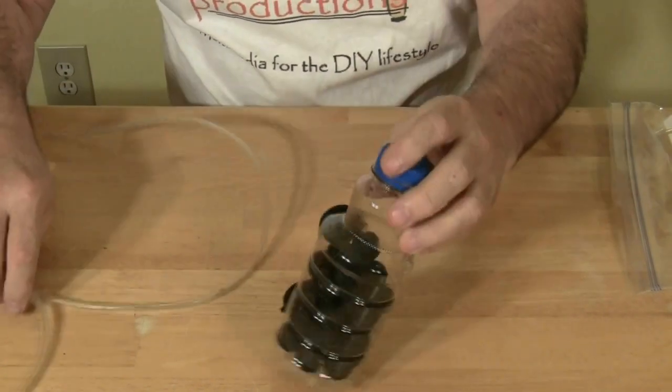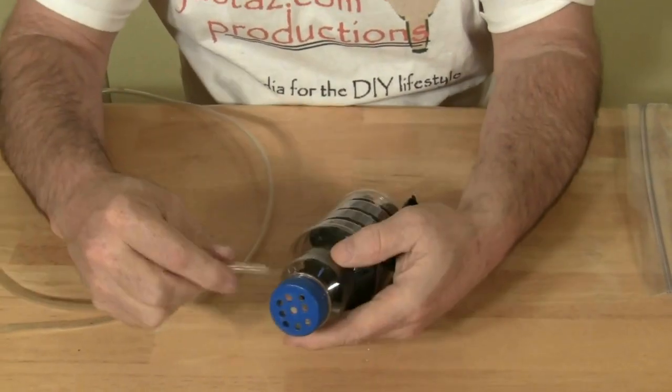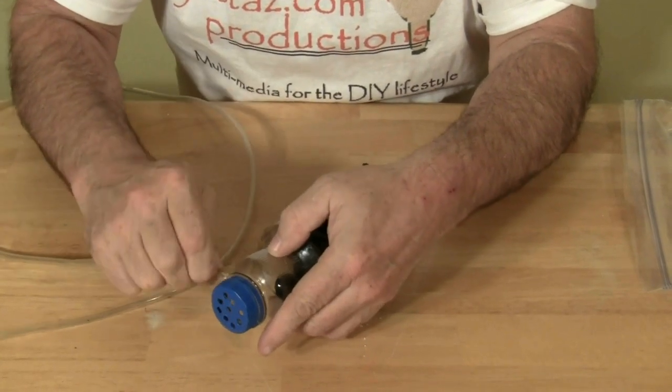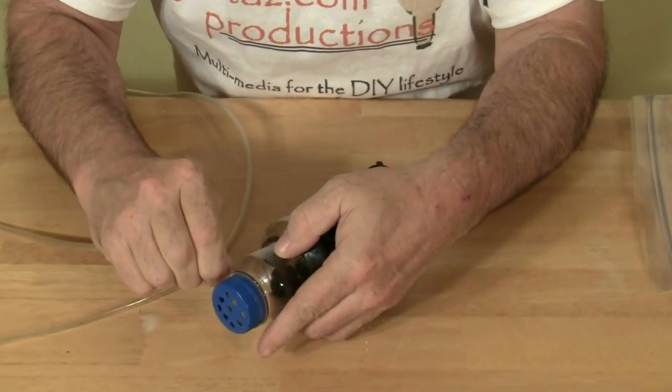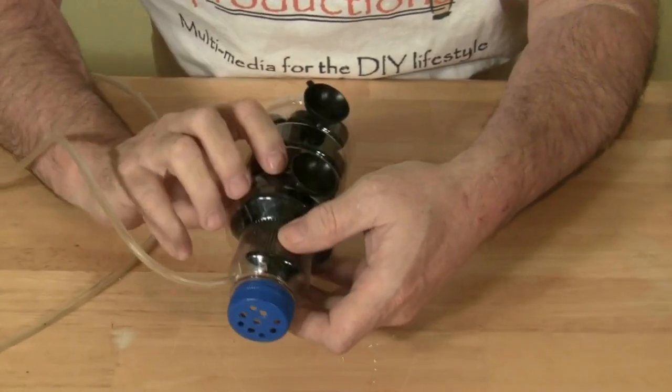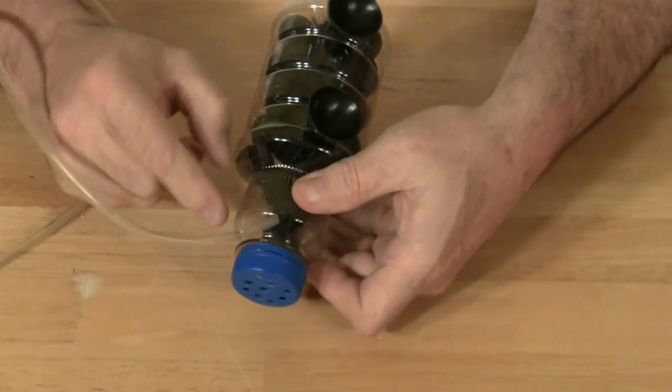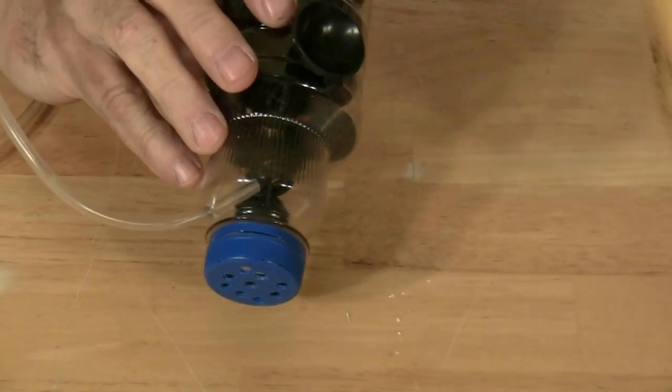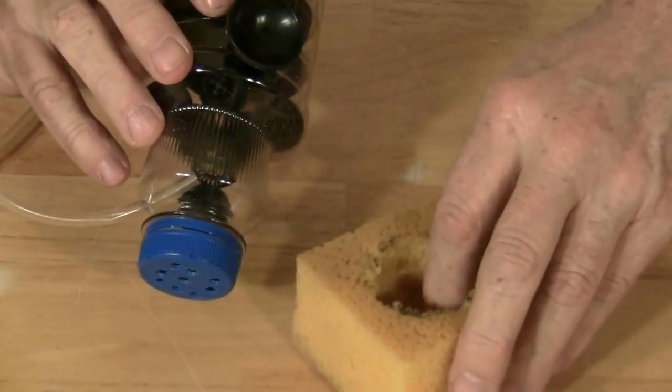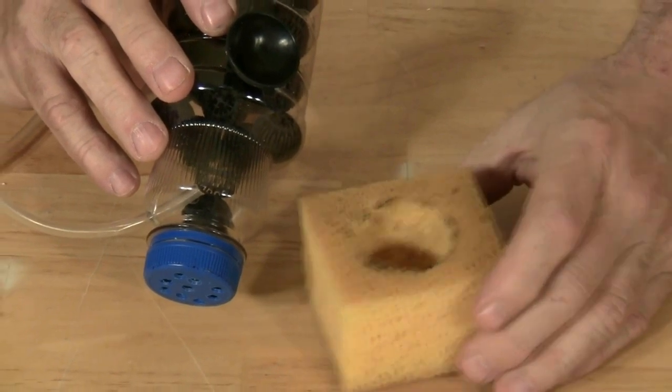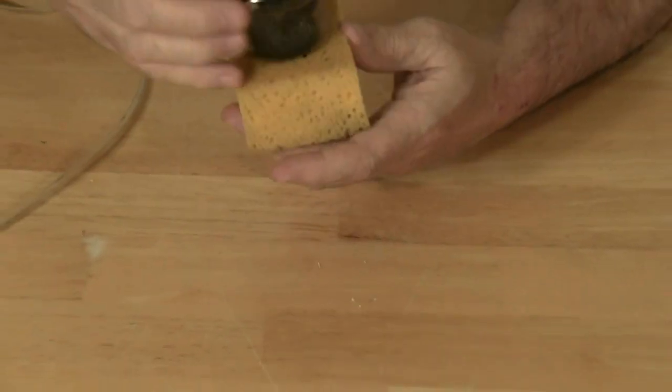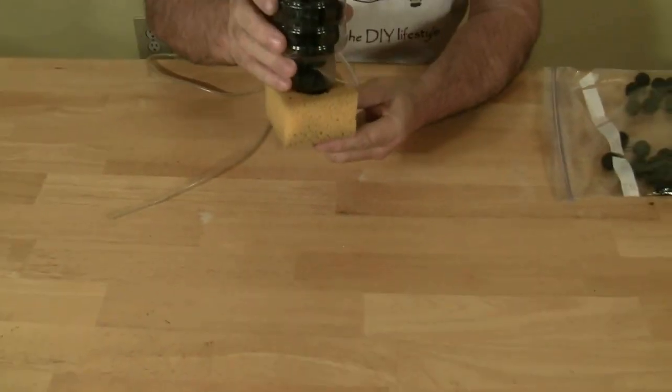Next, we take the airline tubing and place it in the bottle near the center of the bottle. We then take a sponge, carve out the inside, and place that on the bottom. And there we have our filter.